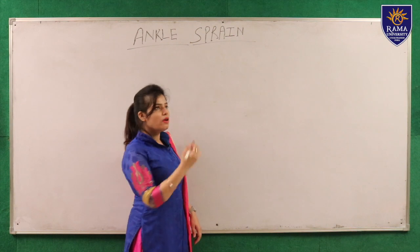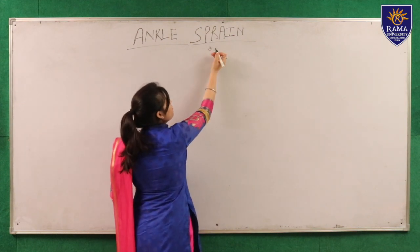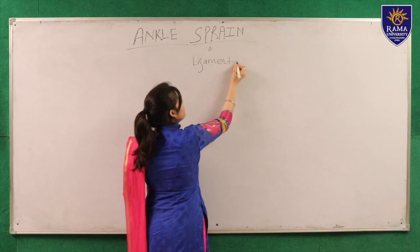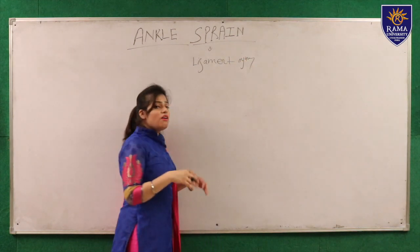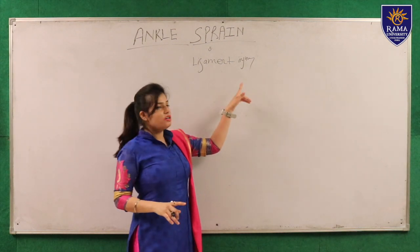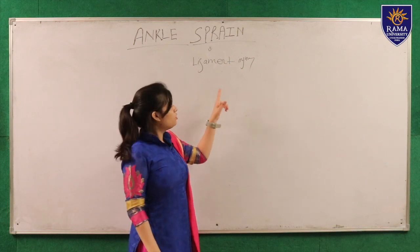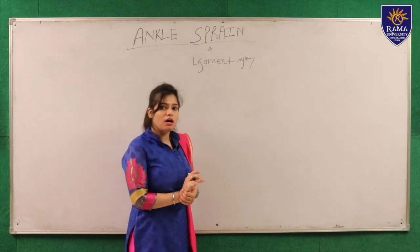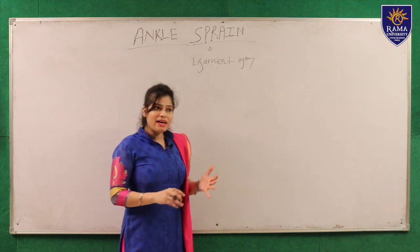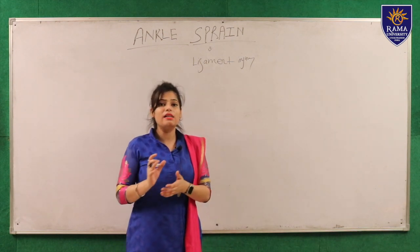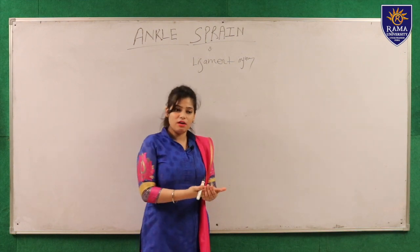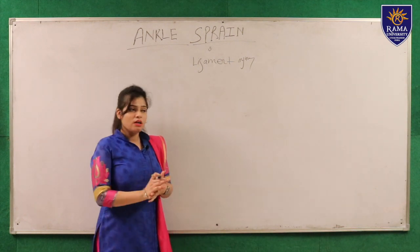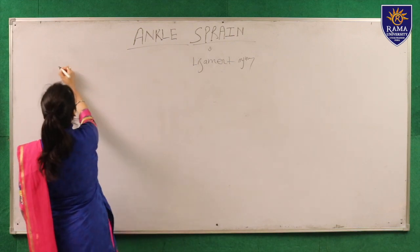Firstly, what is a sprain? The term sprain is known as a ligament injury. In our body, any type of ligament injury that occurs is called a sprain. Ankle sprain is when the ankle ligament is getting torn — either partial ligament tear or complete ligament tear. This is the definition of ankle sprain.